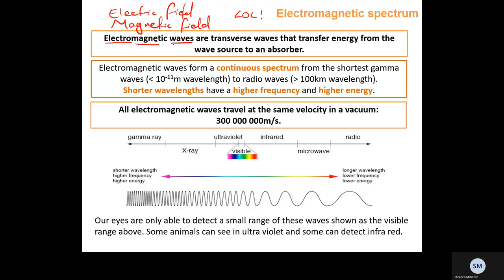Electromagnetic waves are waves made up of an electric field and a magnetic field. They are transverse — transverse waves oscillate perpendicular to the direction of energy transfer or wave travel. EM waves transfer energy from the wave source to an absorber — an example might be the sun transmitting EM waves to a person.